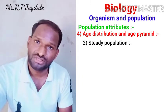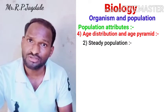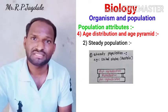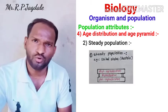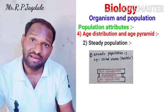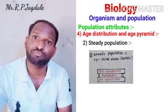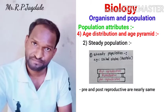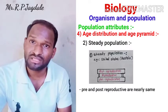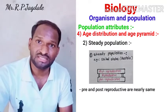The second type is steady population. Steady population means the population neither increases nor decreases significantly — the number remains more or less the same. In the pyramid, the pre-reproductive and post-reproductive are the same, with the reproductive stage in between. When pre- and post-reproductive are equal, the population is stable.